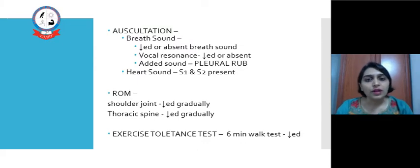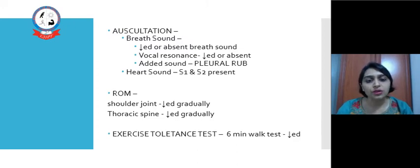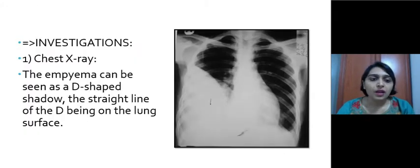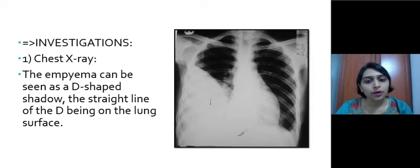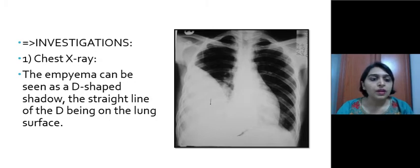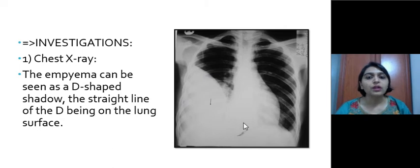Heart sounds S1 and S2 are normally present. Range of motion of the shoulder and thoracic joint is gradually reduced, and we may find reduced exercise tolerance on the 6-minute walk test. Chest X-ray is a very important investigative tool, where Empyema is seen as a D-shaped shadow, with the straight line of the D on the lung surface. We can see a large Empyema Thoracis on the right side of the lung.